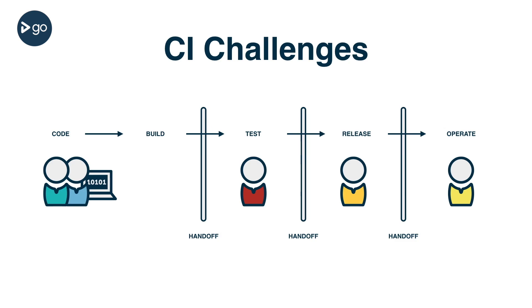Continuous integration doesn't typically include deployment to a production-like environment. Often teams will work in an incremental or even iterative fashion to create new features, but that software doesn't get outside the team's limited scope until someone else declares it ready to move on. One of the biggest drivers towards continuous delivery is the way it combats this problem. Automating deployment of your software on a regular basis to a production-like environment, or even production itself, makes those deployments far less risky.